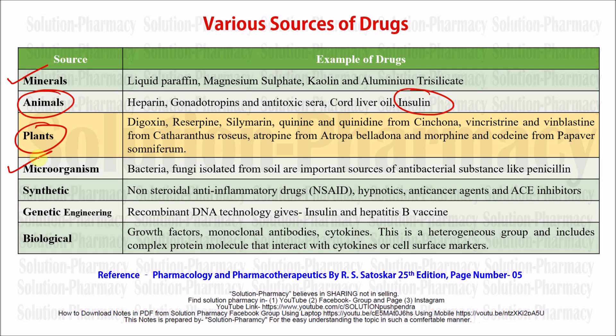Next is genetic engineering, or biotechnology. With the help of recombinant DNA (rDNA) technology, we can derive insulin and the hepatitis B vaccine. Although insulin can be obtained from animal sources, it is very difficult to manage sufficient quantities from animals alone. Genetic engineering provides an alternative — rDNA technology involves recombining the sequence of genetic material to produce insulin.